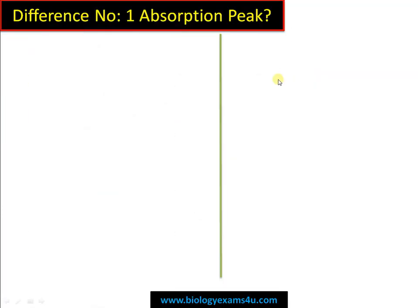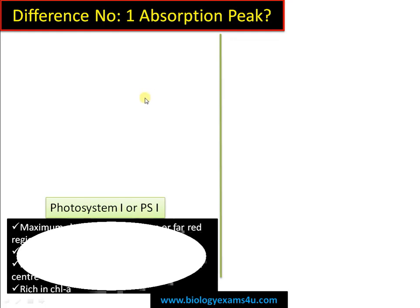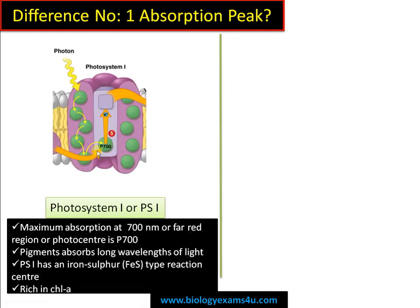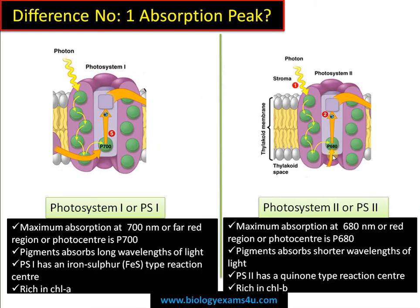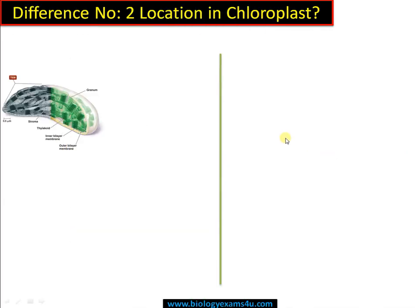The first difference is regarding the absorption peak. Photosystem 1 has a maximum absorption at 700 nanometers — the far-red region of light — absorbing longer wavelengths. It has an iron-sulfur type reaction center and is rich in chlorophyll A. In the case of photosystem 2, the maximum absorption peak is at 680 nanometers, it has a quinone type reaction center, and is rich in chlorophyll B.